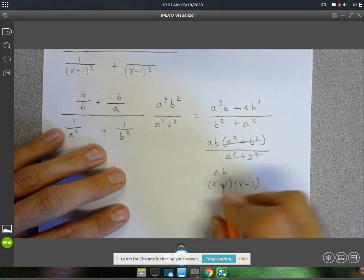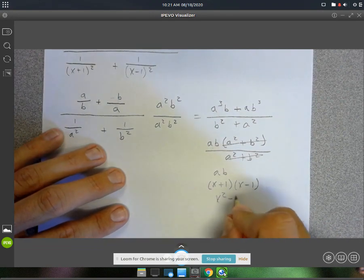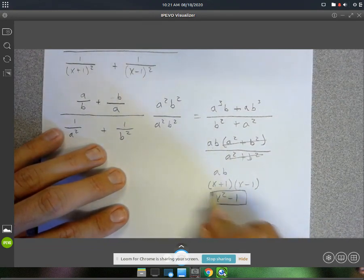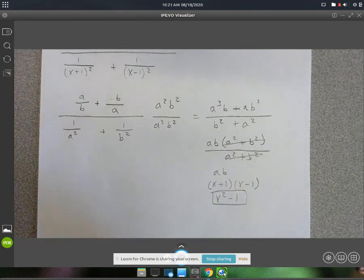or you might want to multiply it out. This is just the difference of squares. So you'd have x squared minus 1.